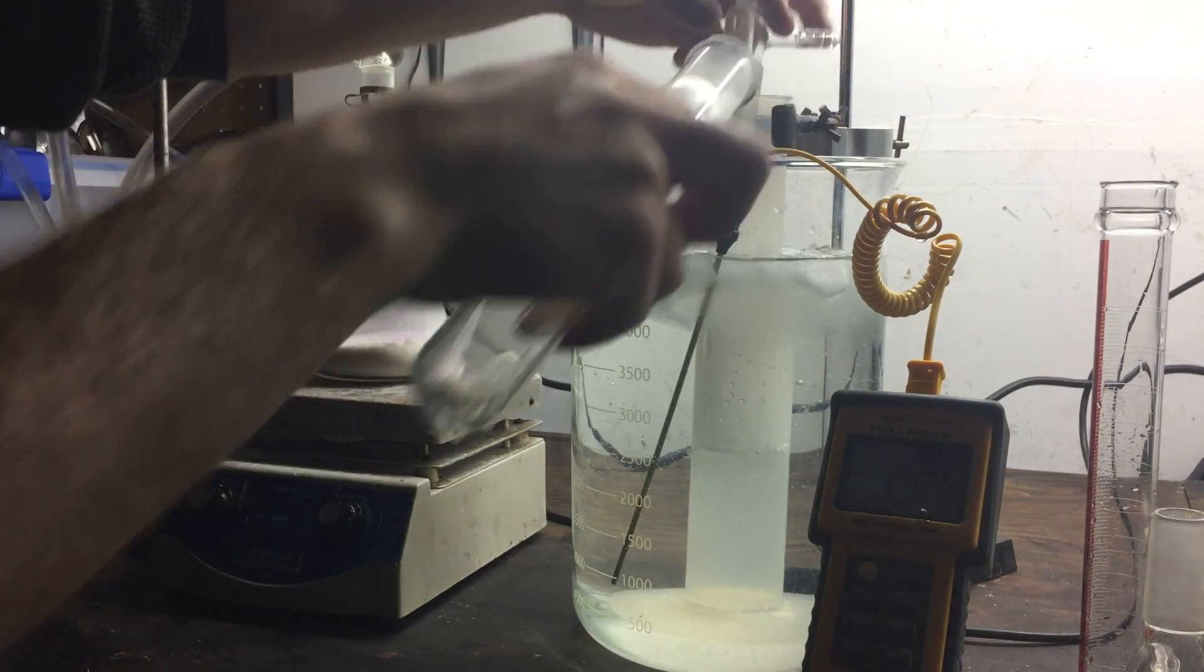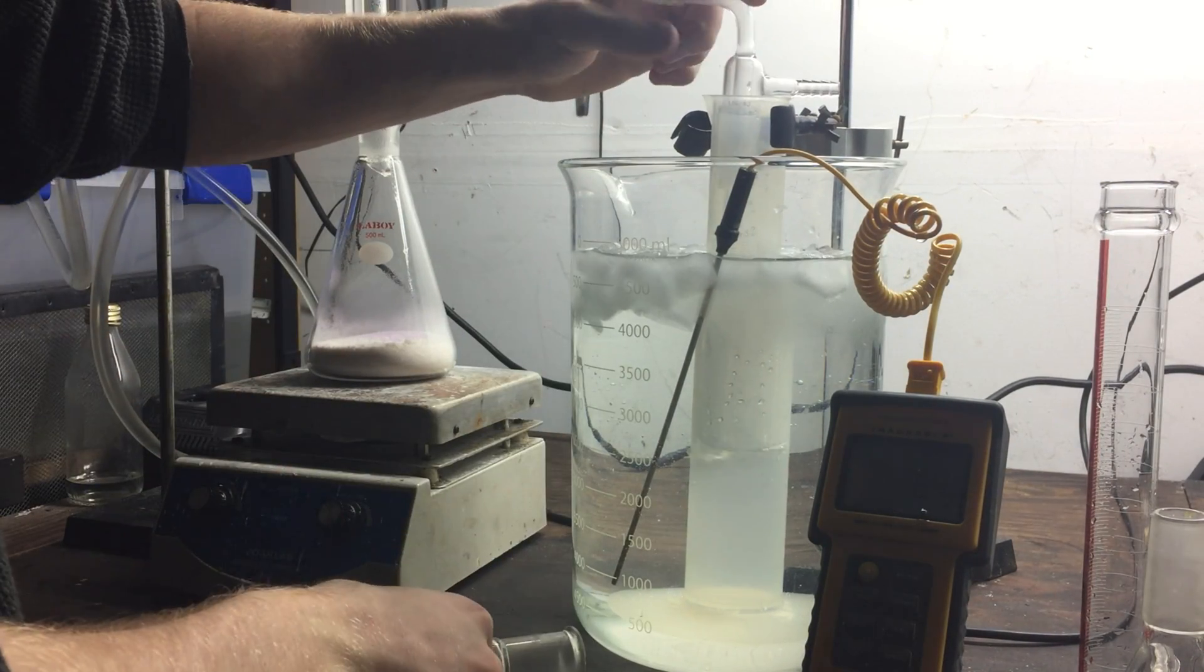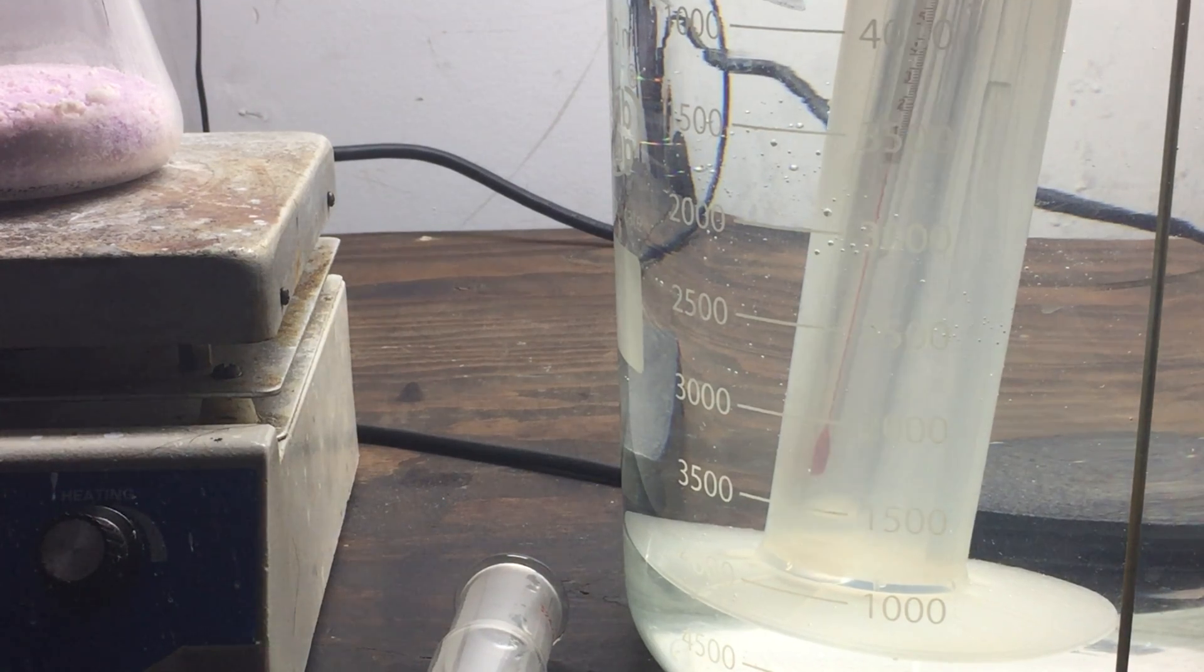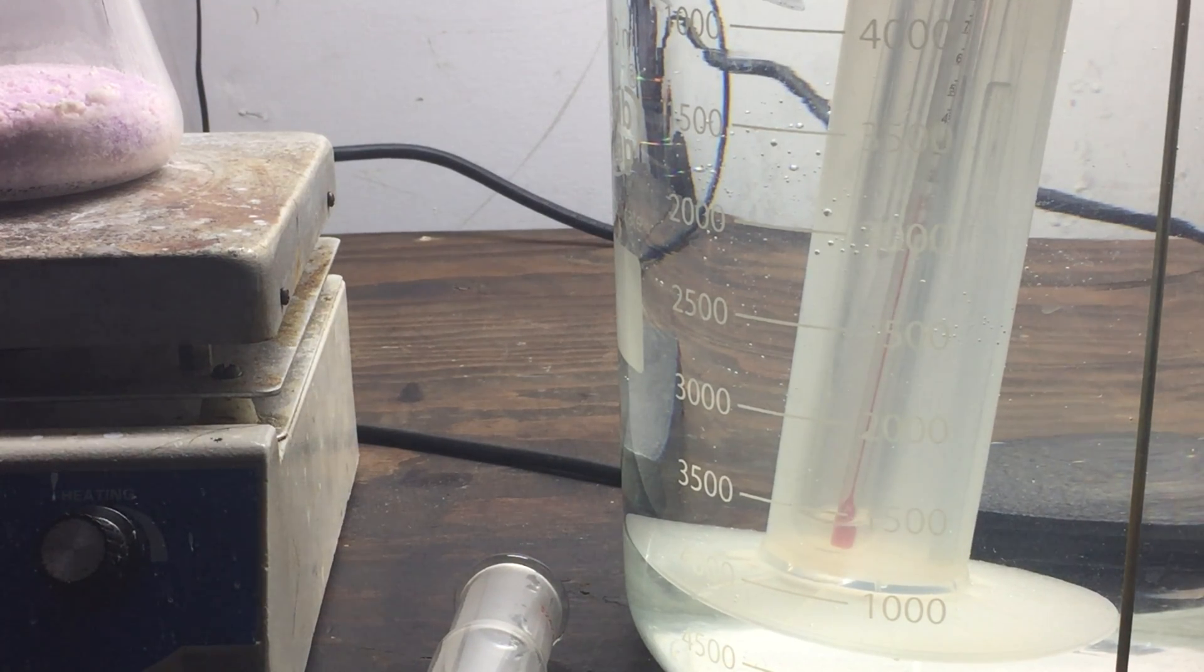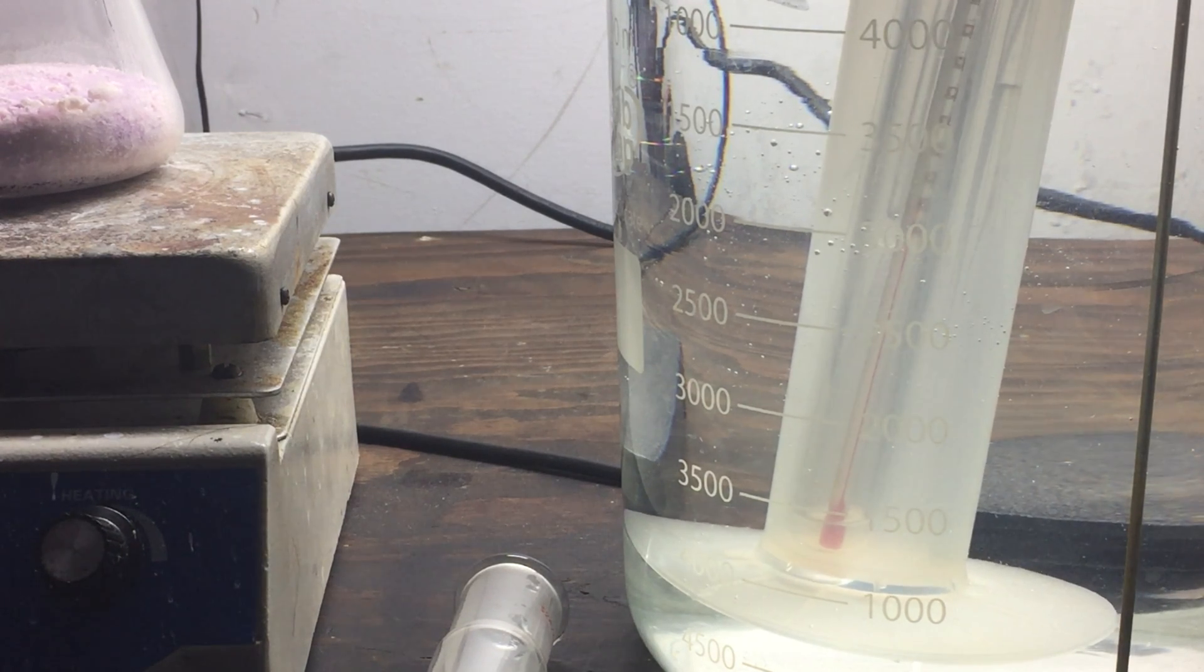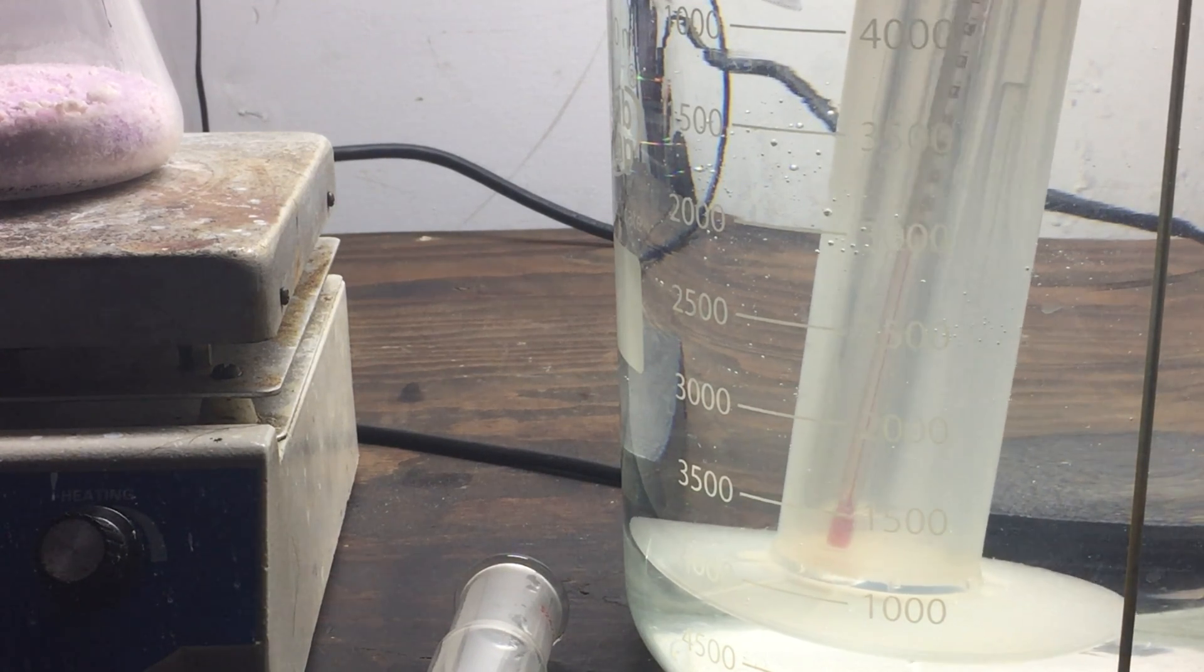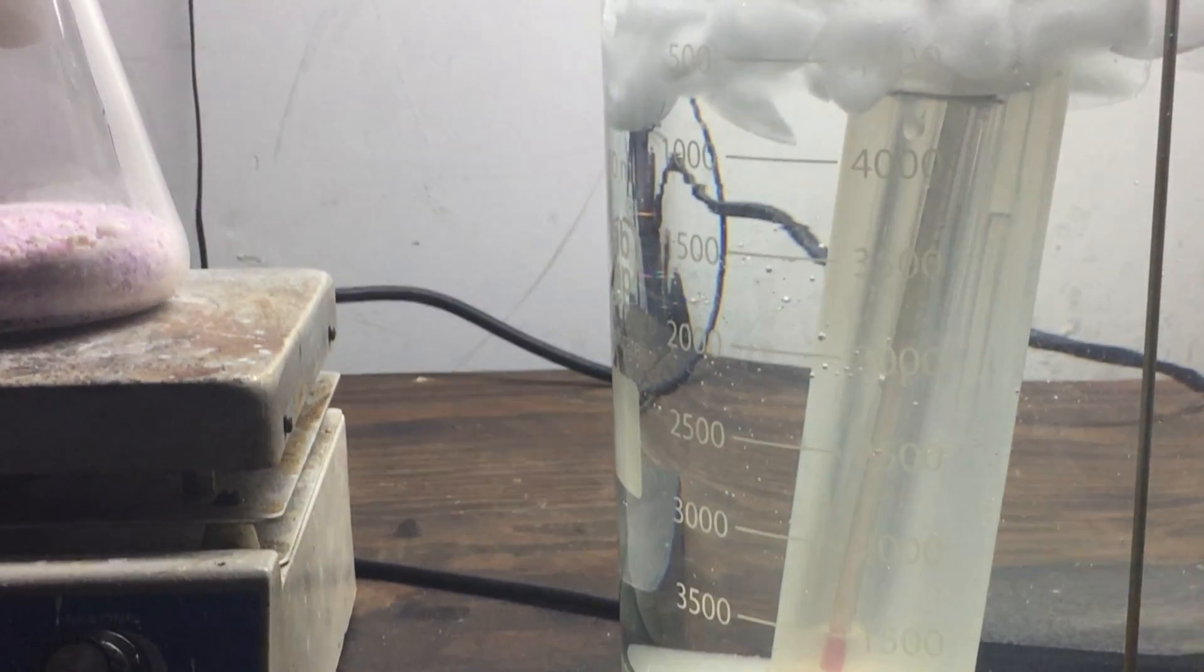To remedy this, I used a large graduated cylinder which could accommodate the increased volume. I also added some stir rods and a test tube to the graduated cylinder to displace the water so that the gas tube could sit more deeply in the solution.